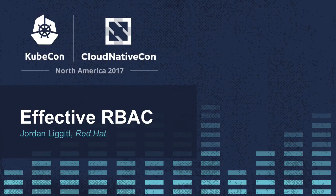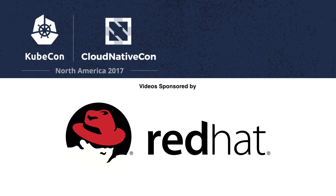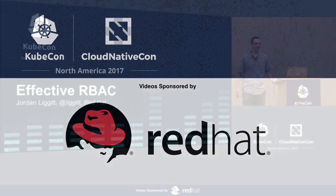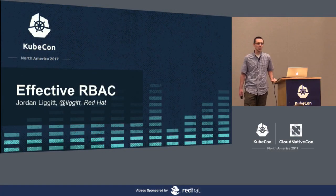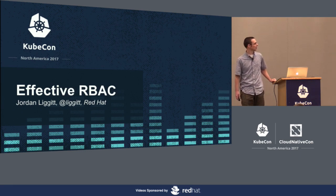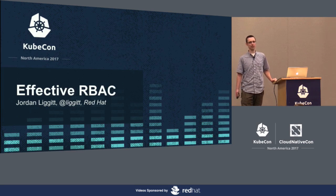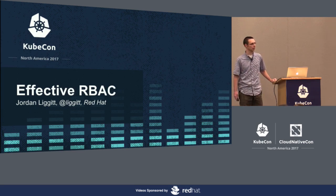Welcome. My name is Jordan Liggett. I work at Red Hat on Kubernetes and on OpenShift, and I'm part of the team that helps lead the Kubernetes authentication and authorization efforts. Today I'm going to be talking about how you can use RBAC more effectively to secure your API servers and your Kubernetes APIs.